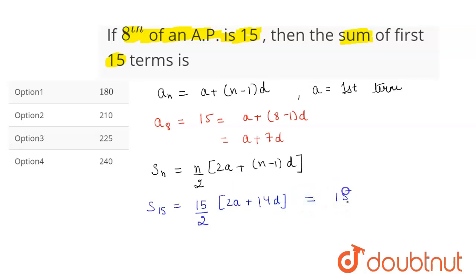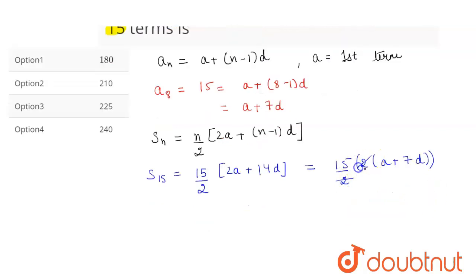if we take 2 common, we will get 15 by 2 into 2 into (a plus 7d). This and this will get cancelled and we will get 15 times of (a plus 7d).